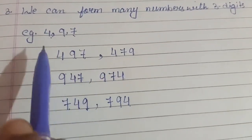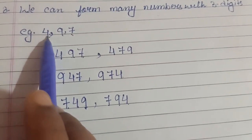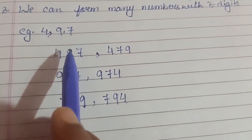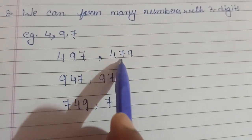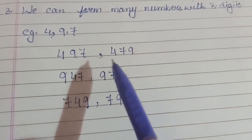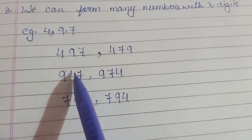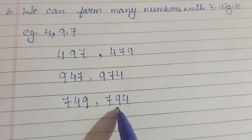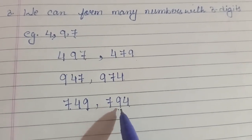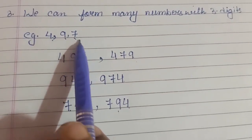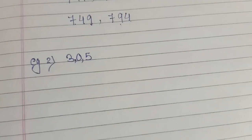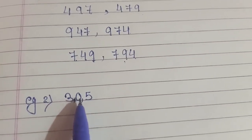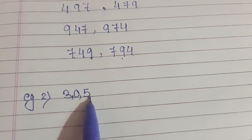So children, this is very simple. We take one digit at the hundreds place and write the rest as they are, then interchange those two digits. This way we get six numbers formed from three digits: 497, 479, 947, 974, 749, and 794.